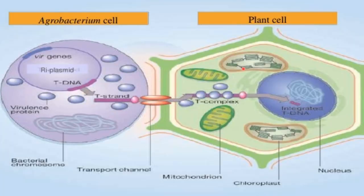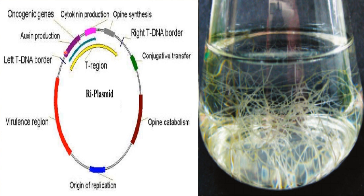Agrobacterium recognizes the acetosyringone signal molecule exuded from wounded plant cells and becomes attached to it. The bacteria contain a root-inducing plasmid called the RI plasmid. The bacteria genetically transfer the part of the RI plasmid called T-DNA, or transfer DNA, to the plant genome where it is expressed. The T-DNA region of the RI plasmid is bounded with an oligonucleotide of 25 base pairs.